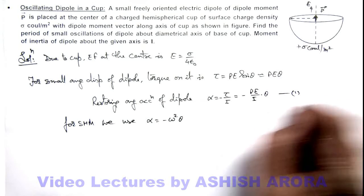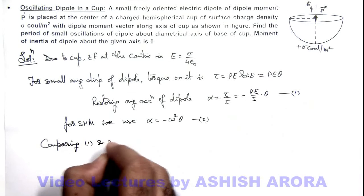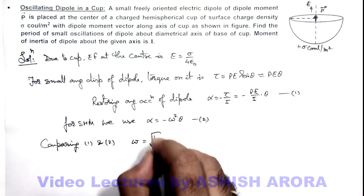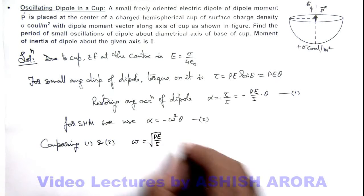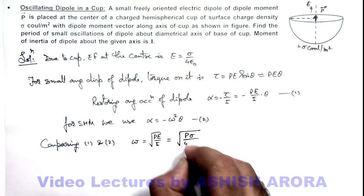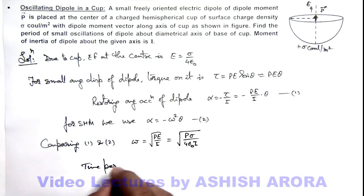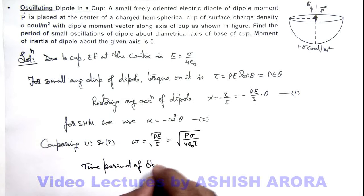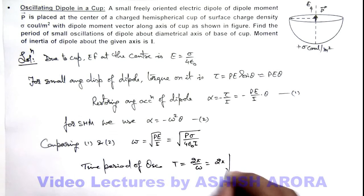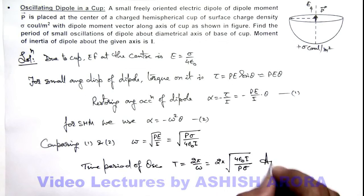Comparing equations 1 and 2, we get the value of the angular frequency of oscillation as the square root of p E by I. Substituting the value of the electric field, the angular frequency will be the square root of p sigma by 4 epsilon naught I. So the time period of oscillation is given as T equals 2 pi by omega, which on substituting the values gives 2 pi times the square root of 4 epsilon naught I by p sigma. And that will be the answer to this problem.